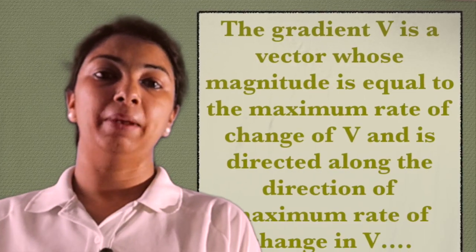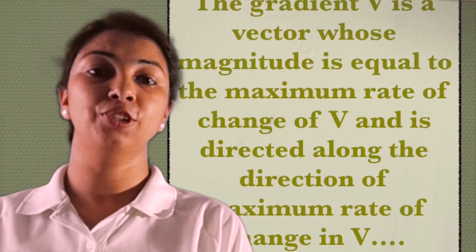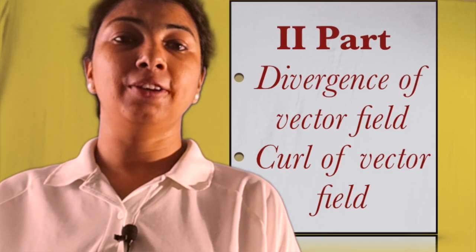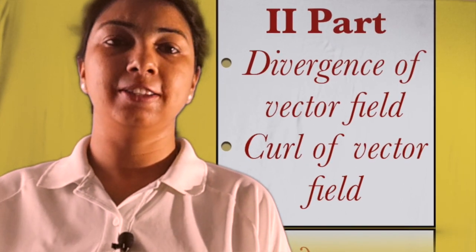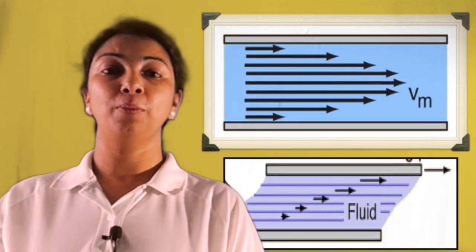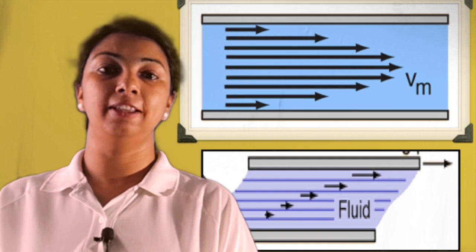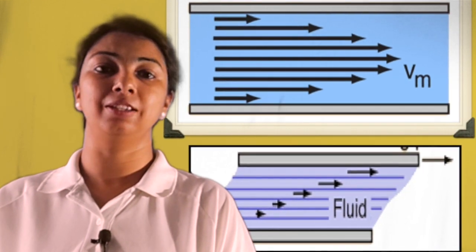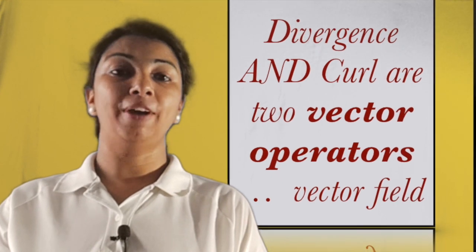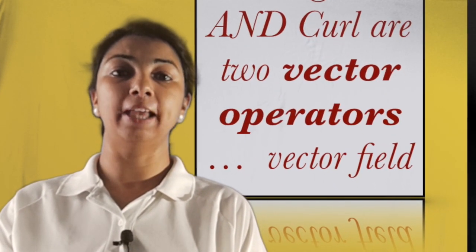When gradient is applied on a scalar field, it gives a vector field and direction of that field is increasing. Let's solve the mystery of our second and third point, that is divergence and curl of the vector field. If we assume the vector field represents the flow of fluid or gas, then vector gives its velocity in that field. Divergence and curl are two vector operators which can be used in many vector field applications.